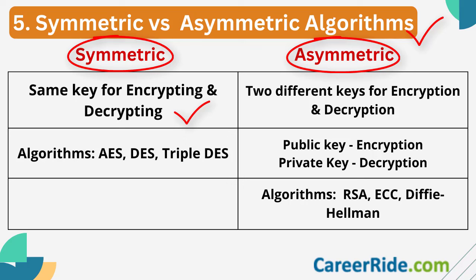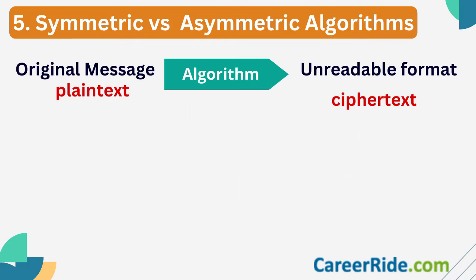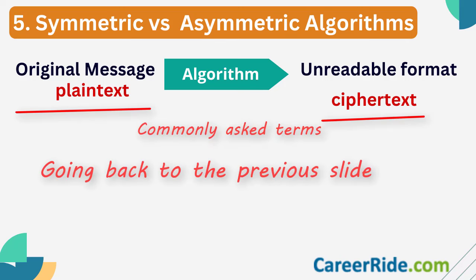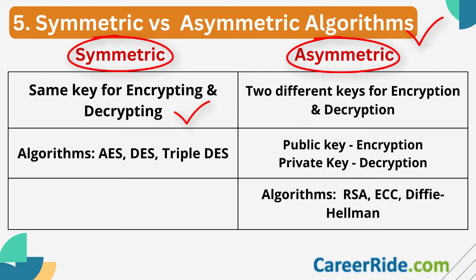For the communication to complete, the sender and the authorized recipient both are required to possess the key. The original message is called plain text; you apply a mathematical algorithm and transform it into an unreadable format called cipher text. Plain text and cipher text are two very commonly asked terms in interviews. Some examples of symmetric algorithms are Advanced Encryption Standard (AES), Data Encryption Standard (DES), and Triple DES.